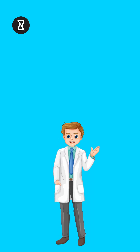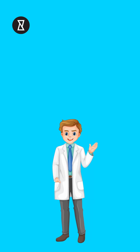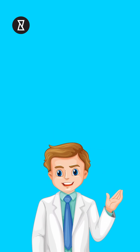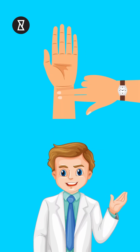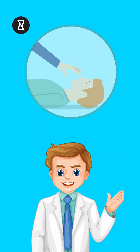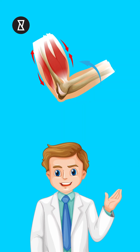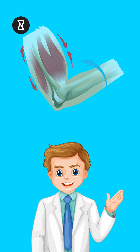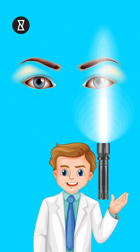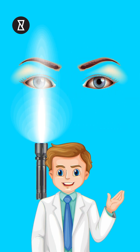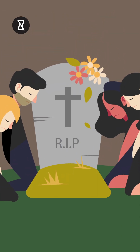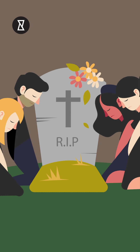To determine if a person is dead, a qualified doctor will first check for the following: absence of pulse, absence of breathing, absence of muscle reflex, and absence of pupillary constriction by shining a light on the eyes. And if all of this is absent, then we are in fact dead.